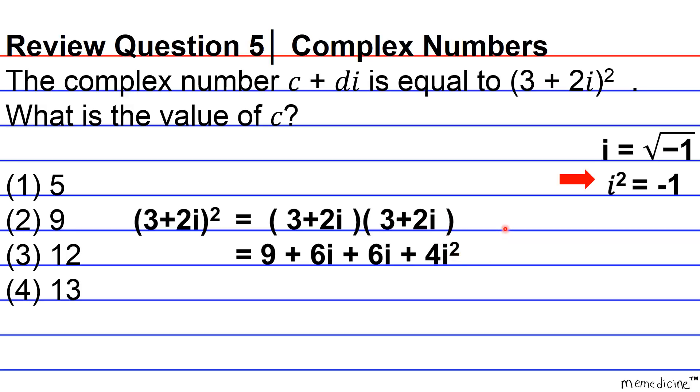But since we know here that i squared is equivalent to negative 1, we can go ahead and make that substitution. And so now we're left with 9 plus negative 4, or 5 plus 12i.